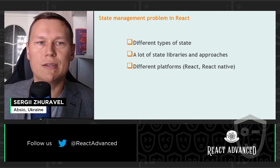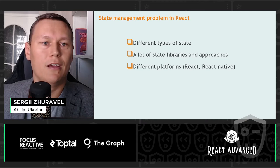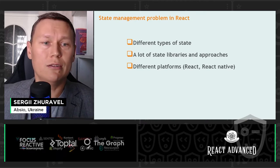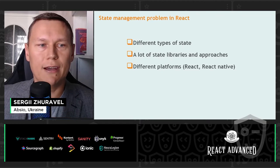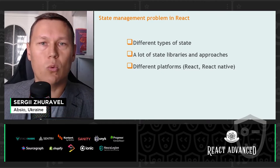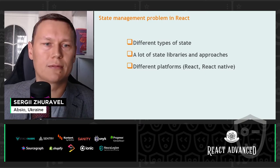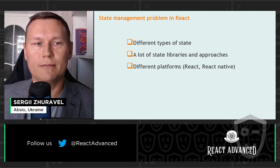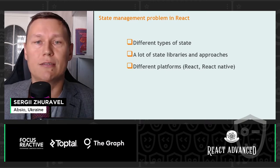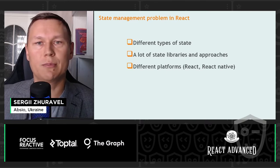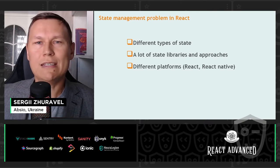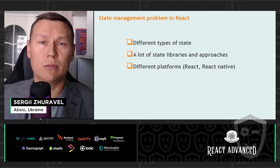About the state management problem in React: in all our applications we have state, and we all know that we usually have some problems managing it. Why do we have those problems? I think it's because we have different types of state, a lot of state libraries and approaches, and we also have different platforms like React and React Native. This makes the problem a little bit complex.